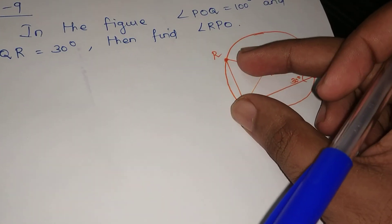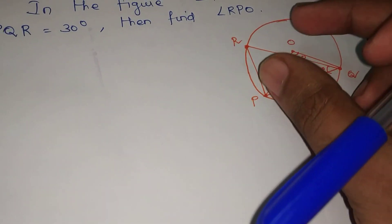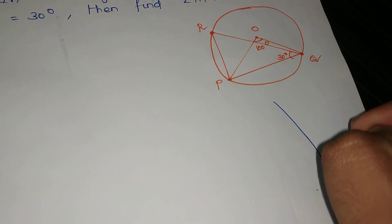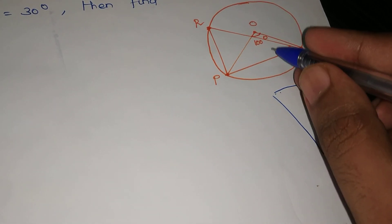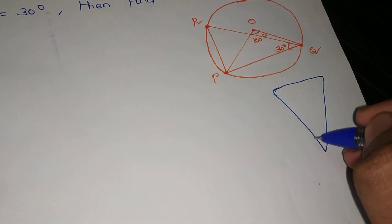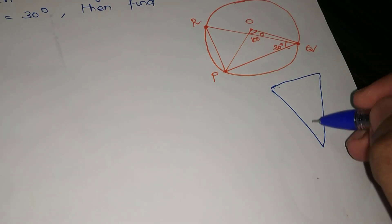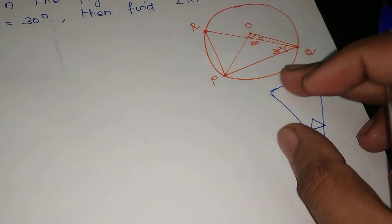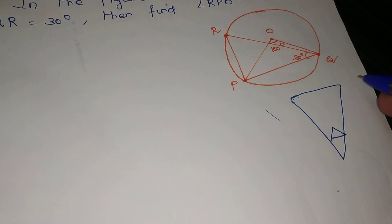Now I am going to do this triangle. For you guys, I am going to show this triangle here. How do you see this triangle? Do you see this triangle? This is a little bit rough — I am going to show it a little rough.